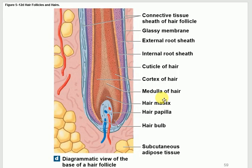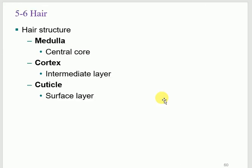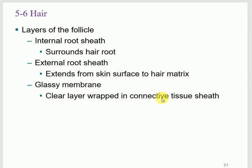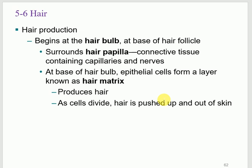The base of the hair root is called the hair bulb, and it contains the hair papilla with blood vessels and nerves. Pulling the hair stimulates these nerves, causing pain. The medulla is the innermost layer containing soft keratin; the cortex contains hard keratin; the cuticle is the outermost layer. From inside to outside: medulla, cortex, cuticle, internal root sheath, external root sheath, and glassy membrane.